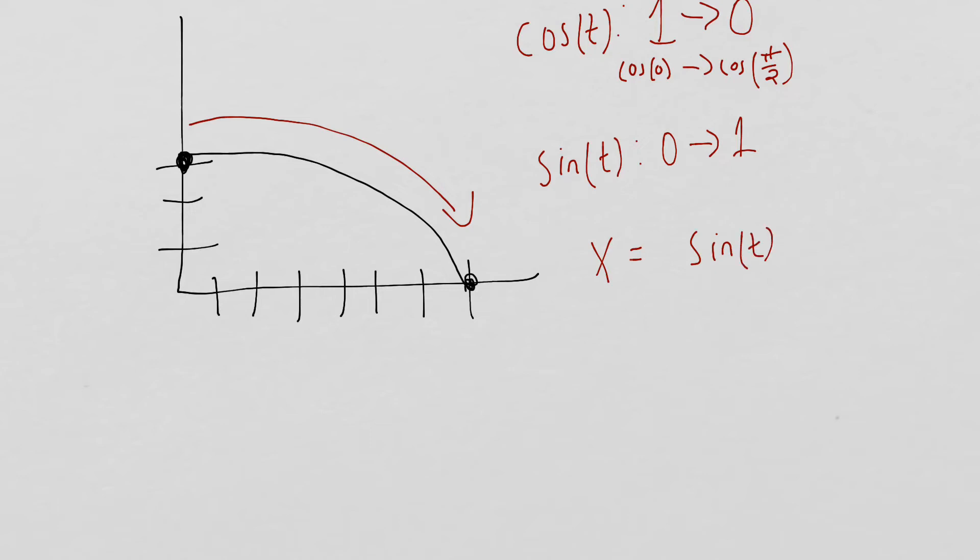So similarly, at π/2, at time π/2, our y value is 0, and which of these is 0 at π/2? Well, cosine is 0 at π/2, so our y value must be cosine.